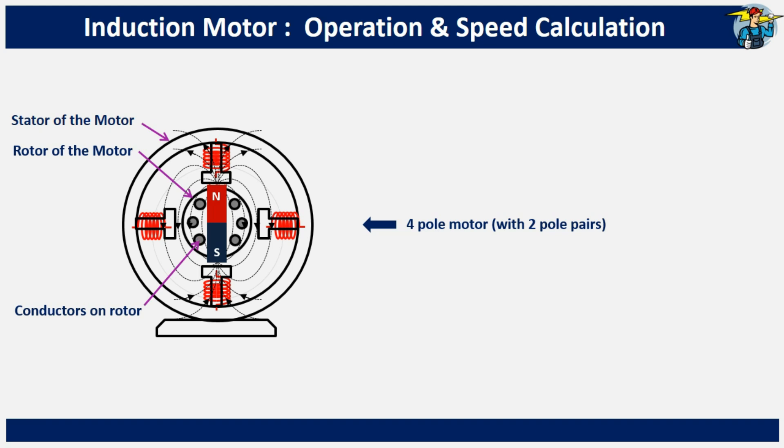This speed difference between the rotor and the rotating magnetic field is known as the slip of the motor.